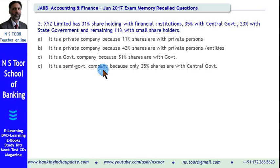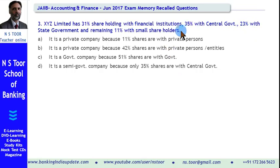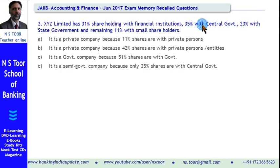Central government is holding 35% and state government is holding 23%. What is the correct answer? Friends, any company whose shareholding — at least 51% — is held by government, whether by central government or by state government, is called a government company. In this case, 58% shareholding is held by central government plus state government. Hence it is a government company.